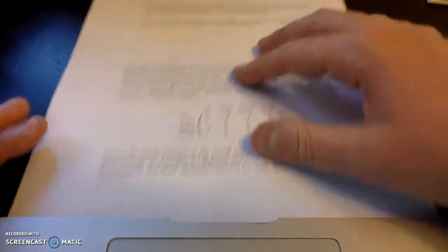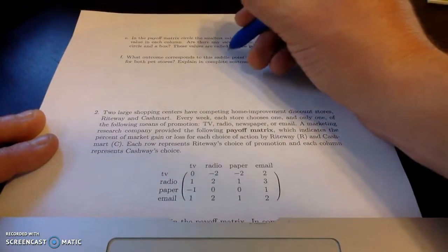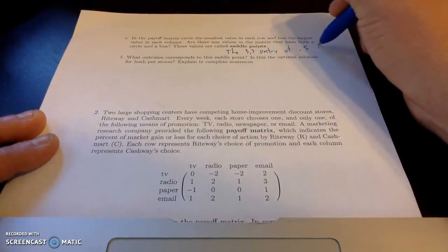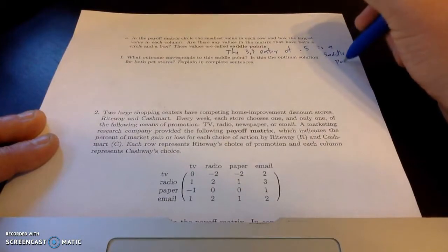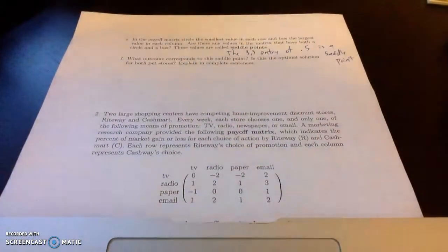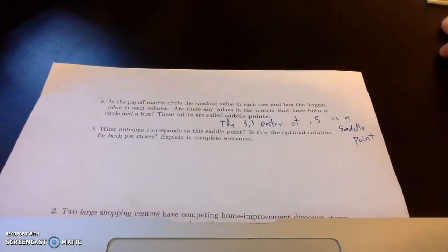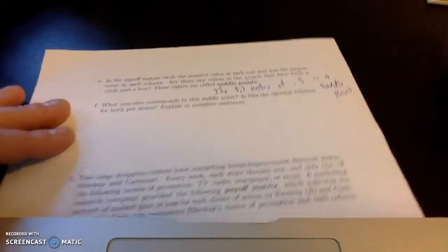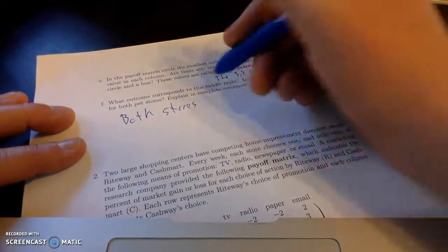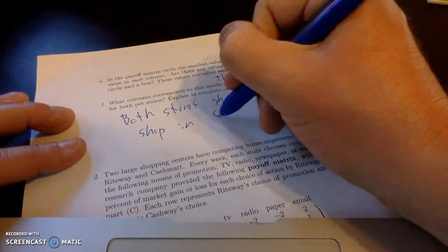So we do have a saddle point. It is possible to have no saddle points or multiple saddle points. But we have a 3 re-entry of 0.5 as a saddle point. Alright, okay, so what do we do with this? A saddle point is an optimal solution. So basically what it's saying is here, both stores, the Pug's Life Cats Meow, should open shop. That's why I think that was South Lake Tahoe.